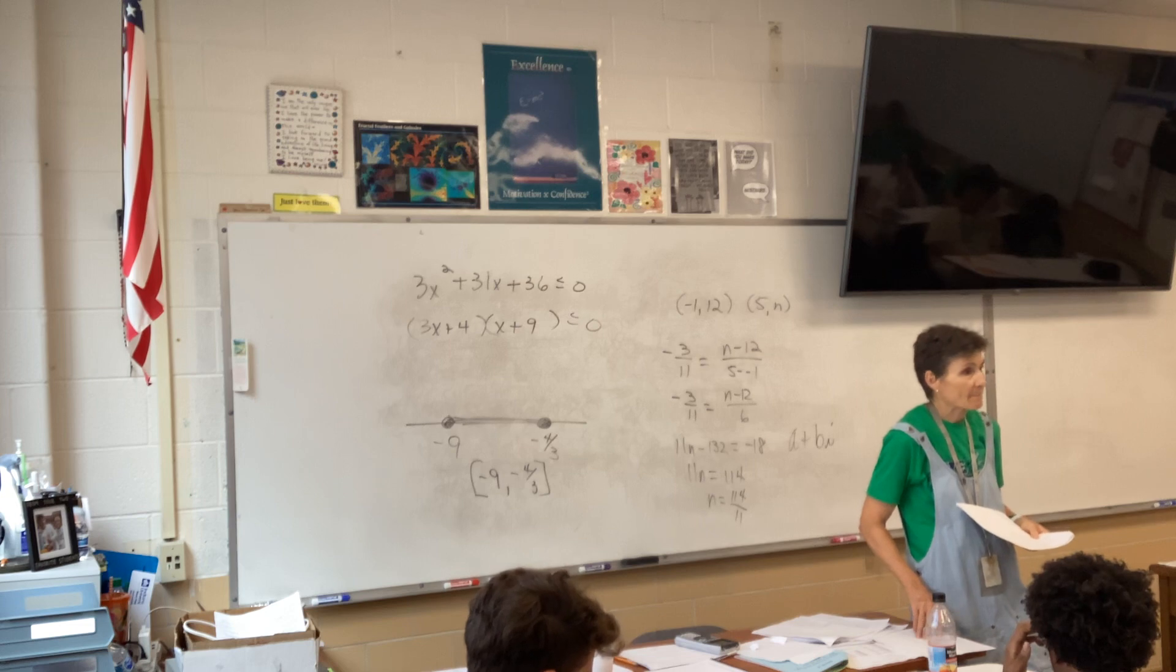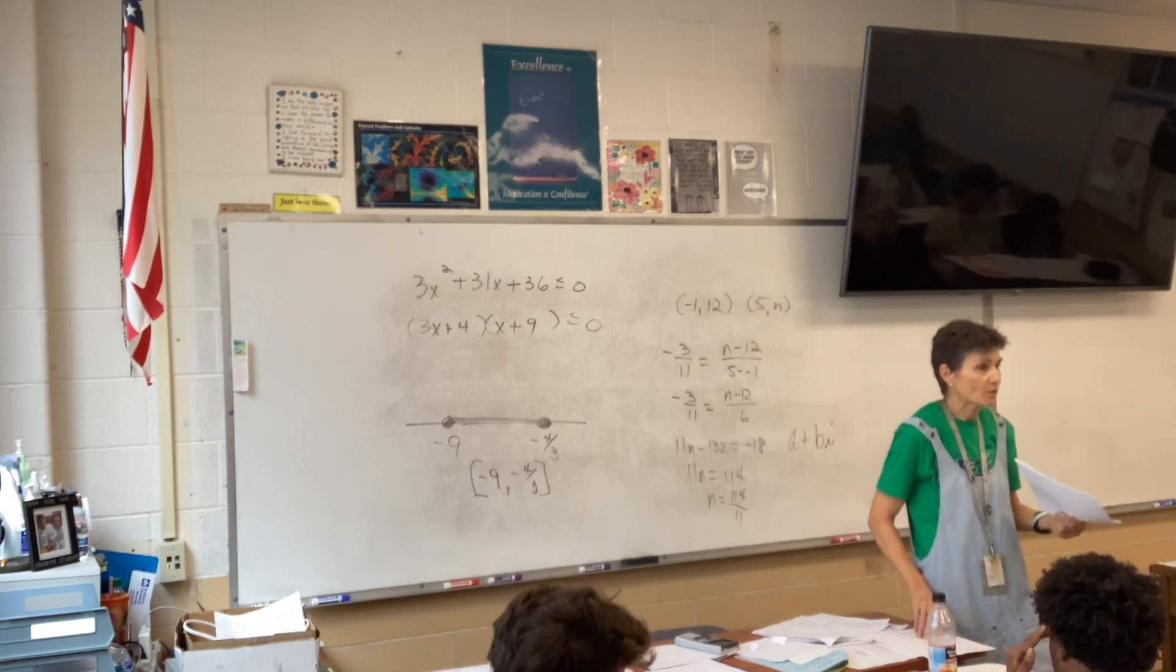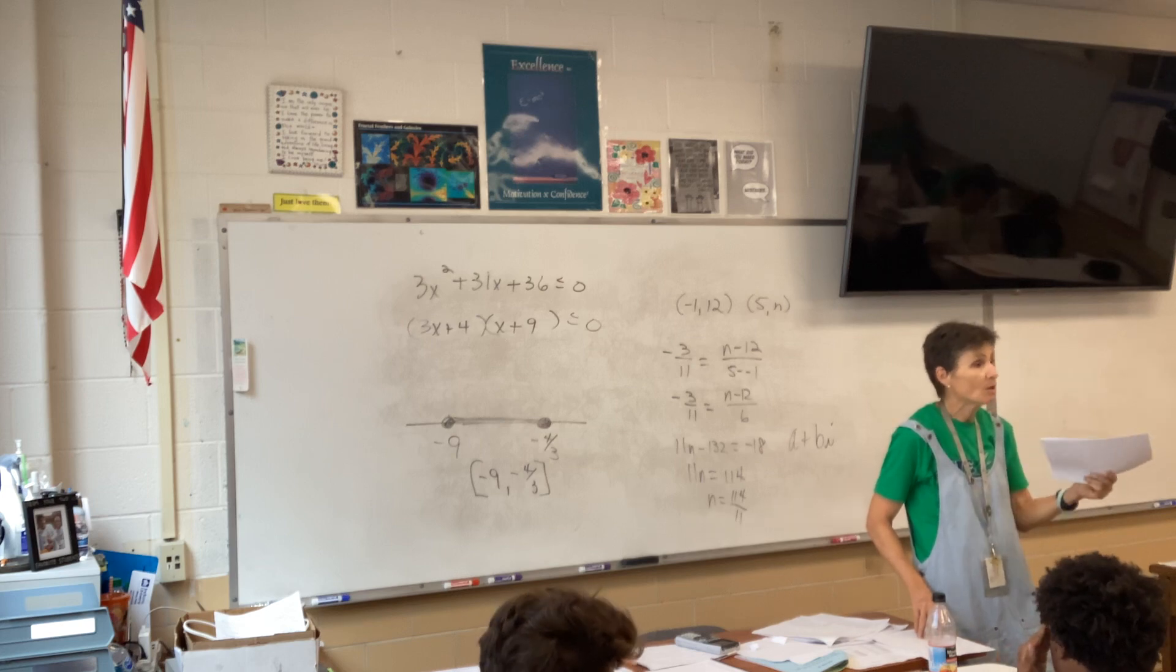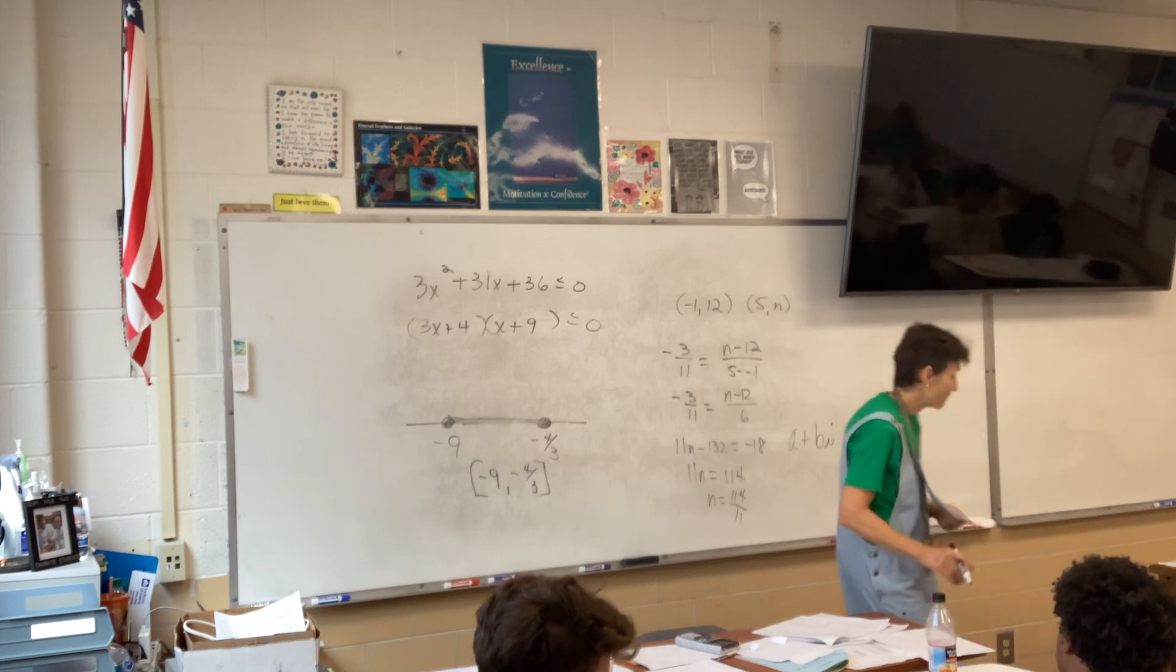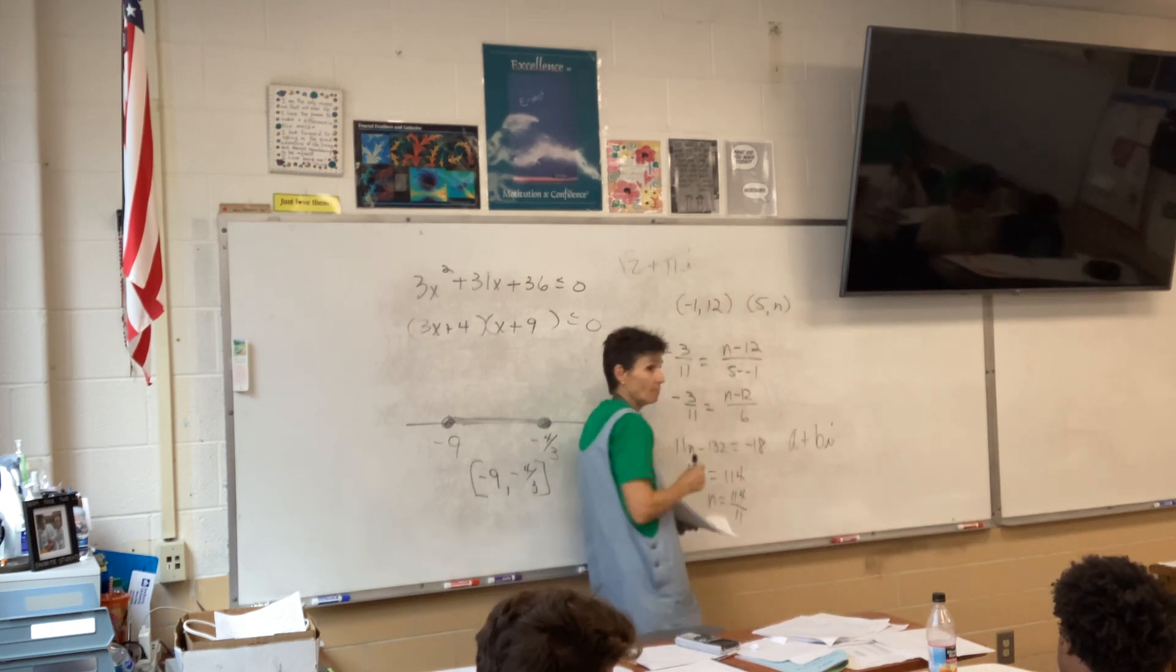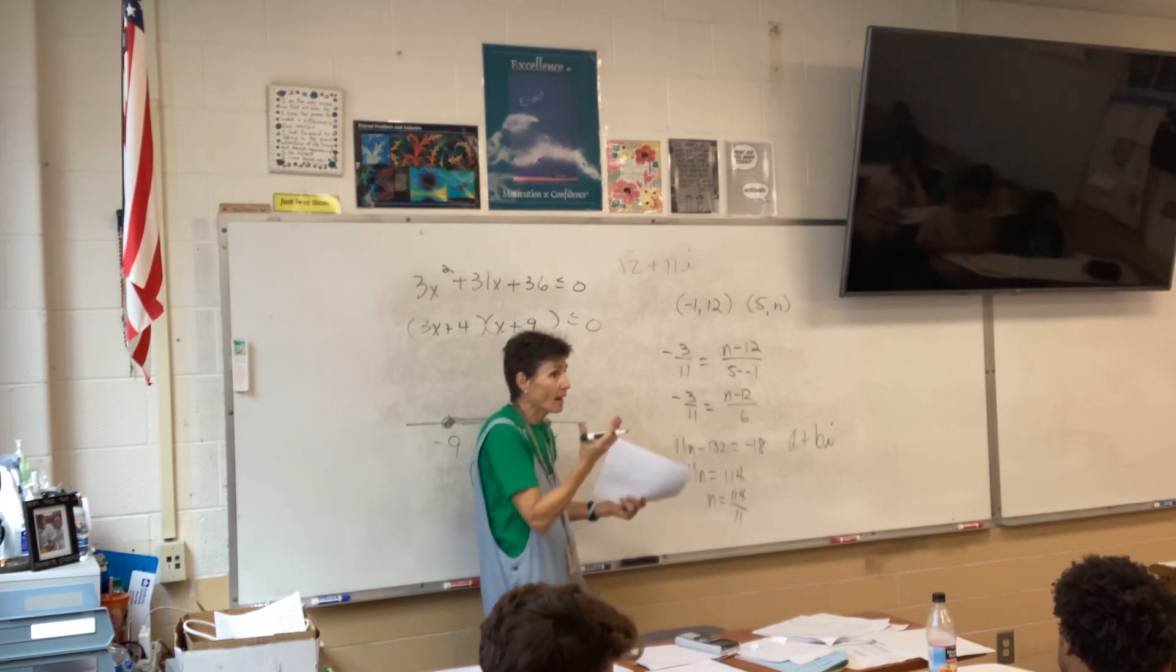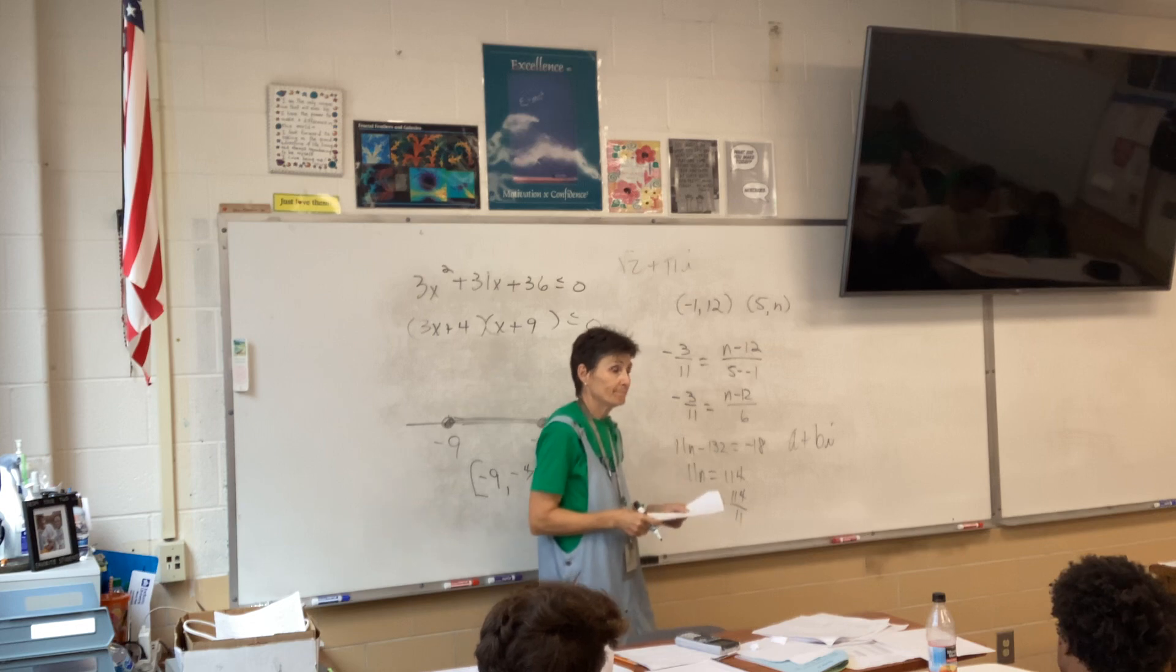Okay. A can be anything real. A can be a radical. Yeah. A can be pi. It can be anything. As long as, so it just has to be a real number? Mm-hmm. That's the definition of complex numbers, A plus Bi, where A and B are real.